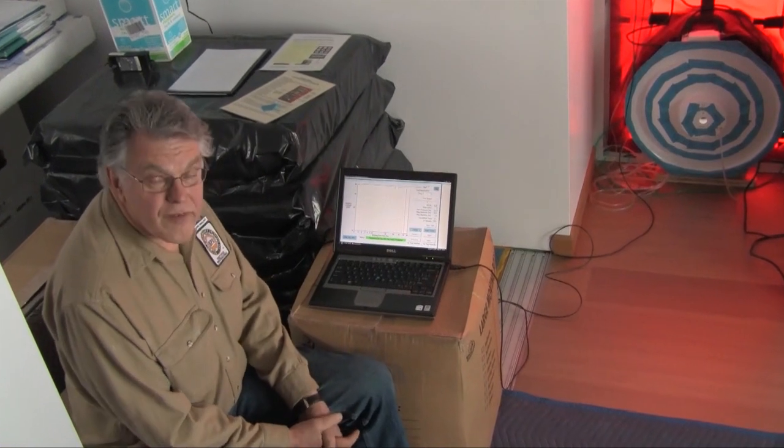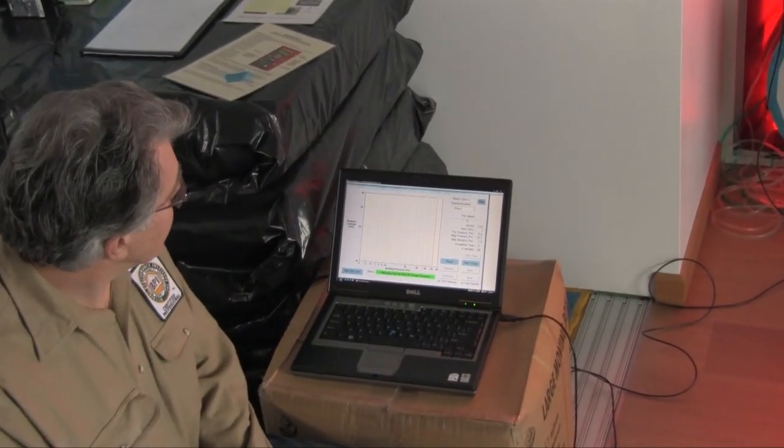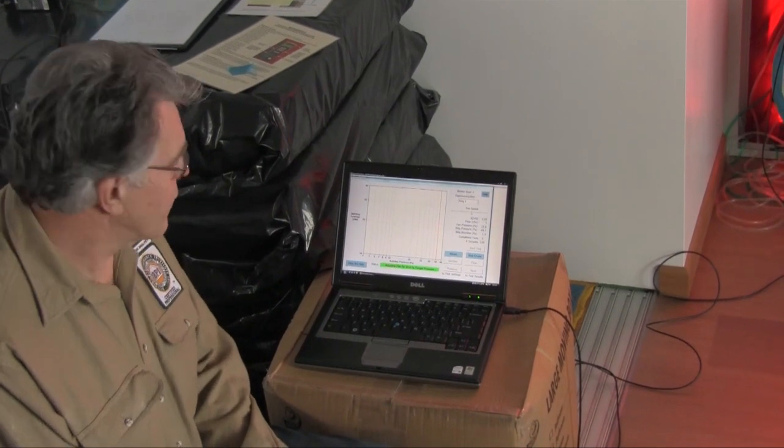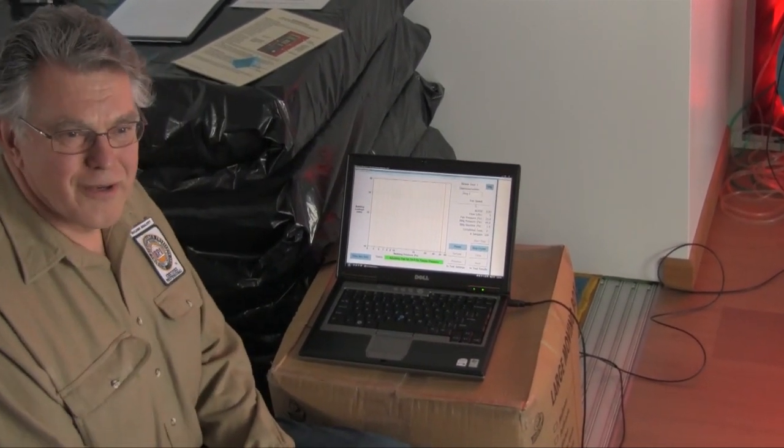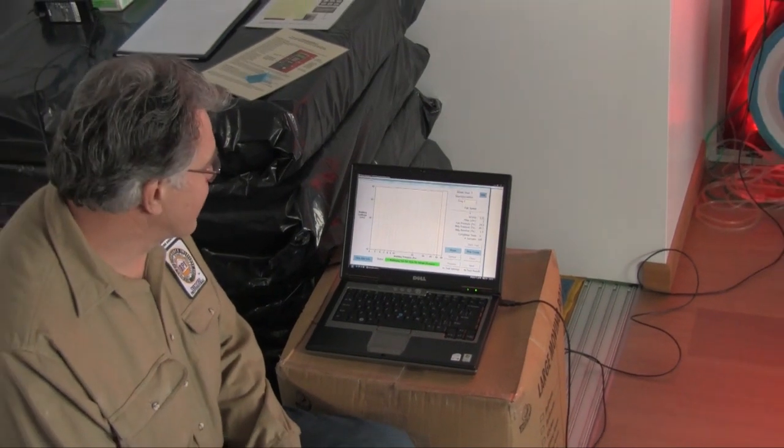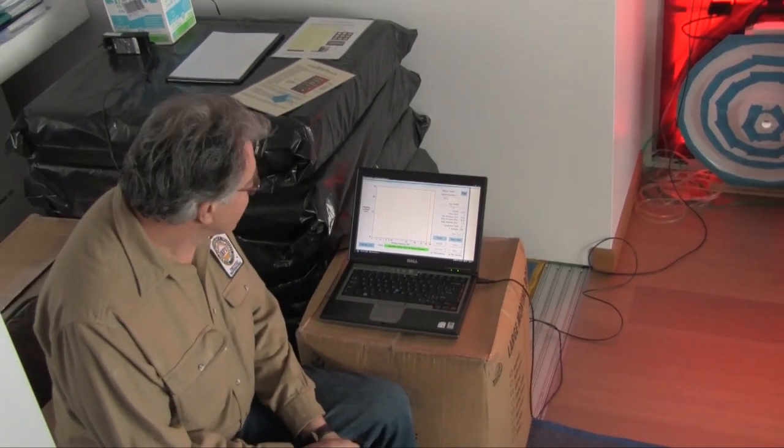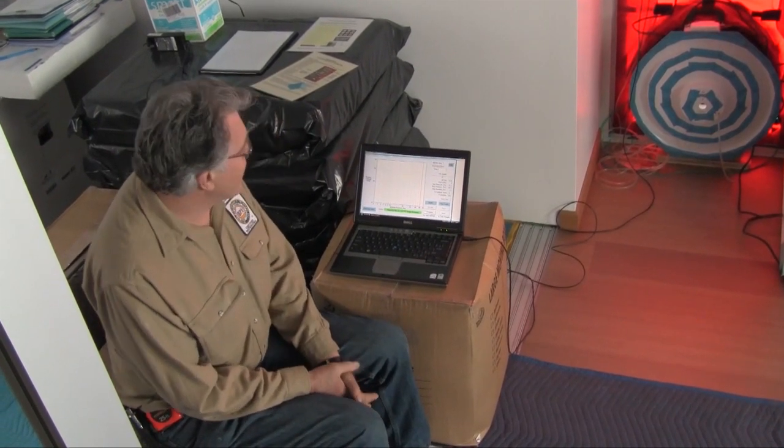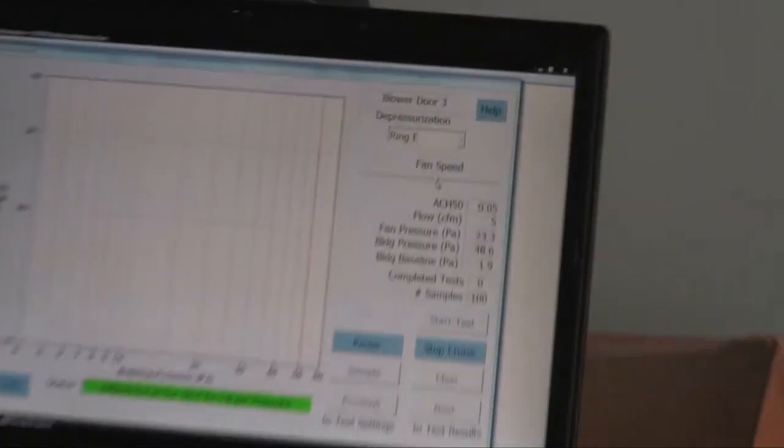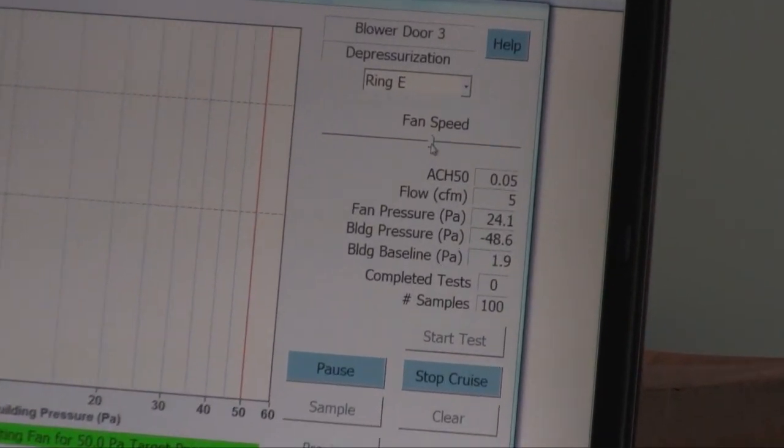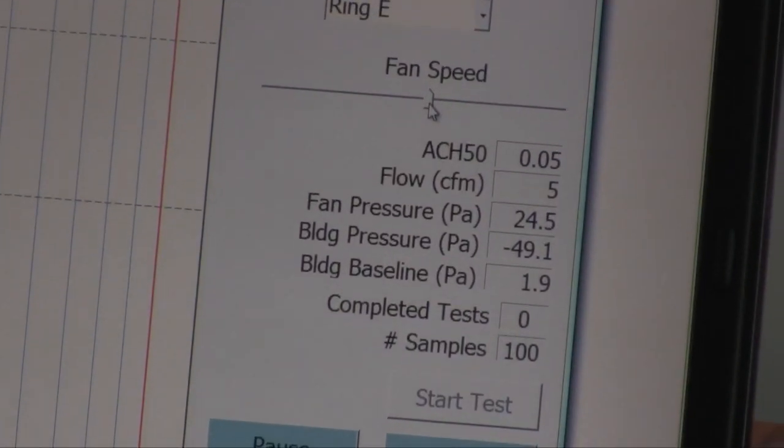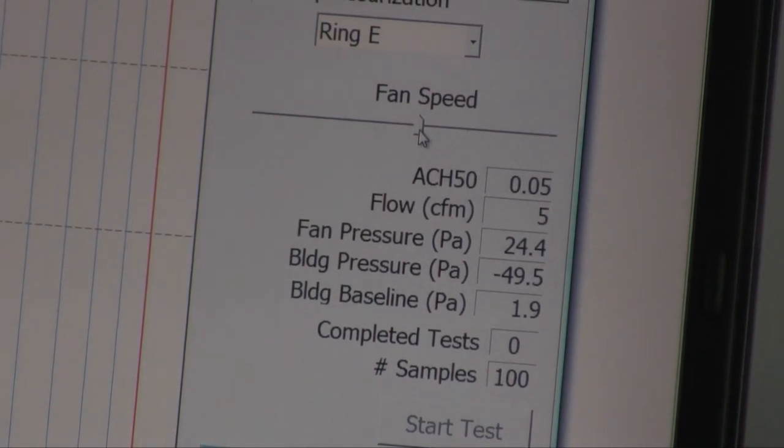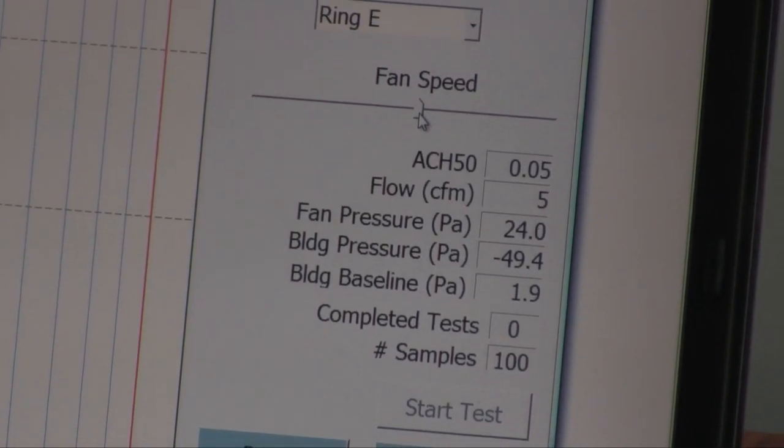Our air changes per hour at 50 pascals is calculated at 0.05. That is phenomenally low. Tom, I knew you did a fantastic job in sealing this house, but I don't know how you got it that tight. It's way, way tighter than anything I've ever tested before. In fact, I don't think I've tested anything below 0.5, much less 0.05.